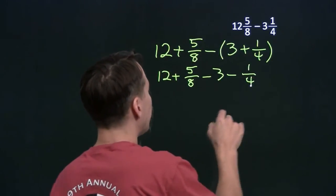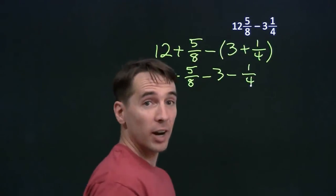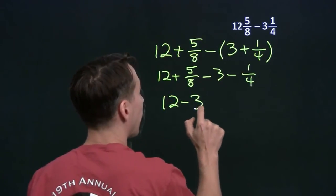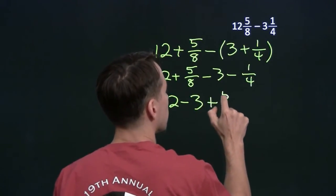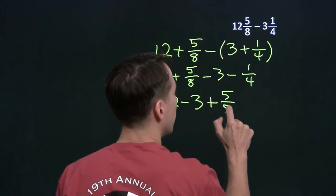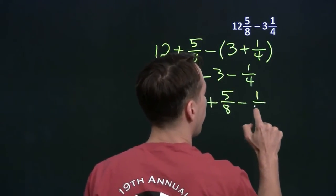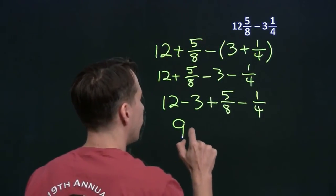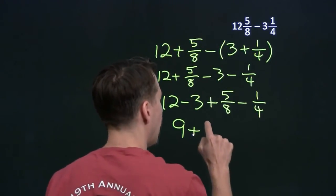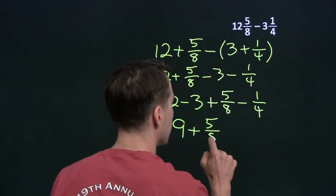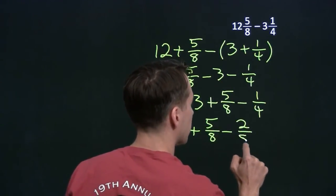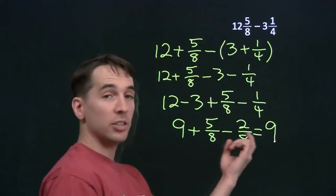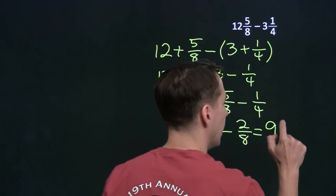Very important. Now once we have everything as integer parts and fractional parts, we can handle the integers and the fractions separately. We can split this up as 12 minus 3, and then 5 eighths minus a quarter. 12 minus 3 — that's easy, that's just 9. For 5 eighths minus a quarter, we'll get a common denominator. The common denominator is 8. One quarter is 2 eighths. So we get 9 and 5 eighths minus 2 eighths, which gives us 3 eighths.